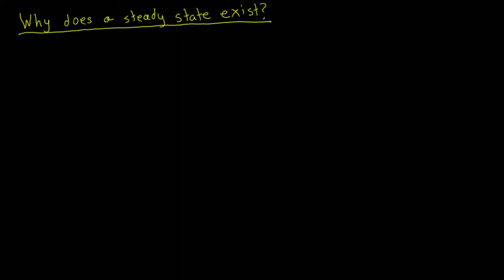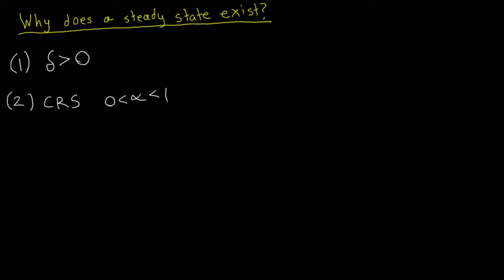Now that we've solved for all four endogenous variables, let's answer why a steady state exists in the Solow growth model. There are two reasons: first, capital depreciates every period at a constant rate delta. Second, the production function exhibits constant returns to scale because the parameter alpha is strictly between 0 and 1. Because of these two reasons, a steady state exists.